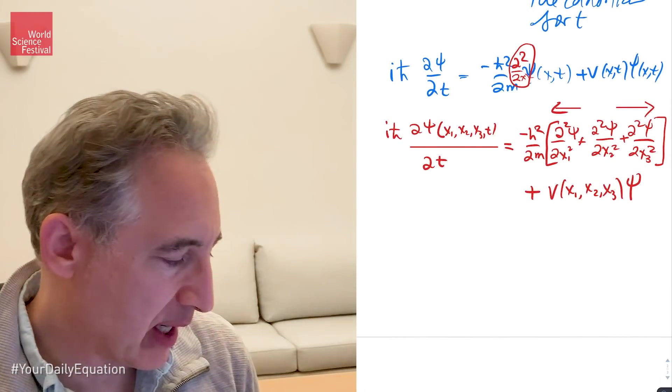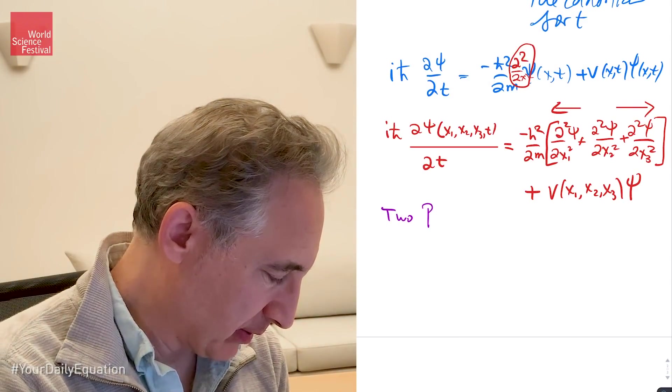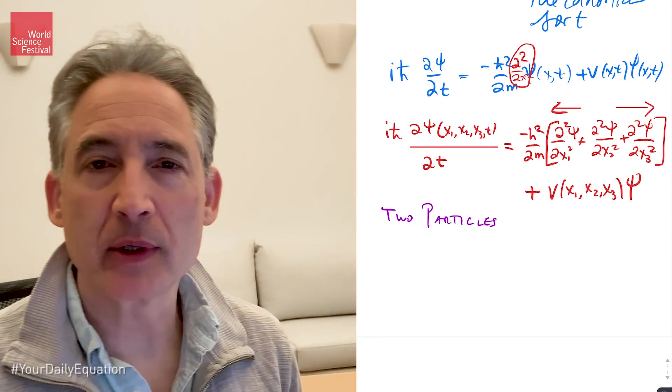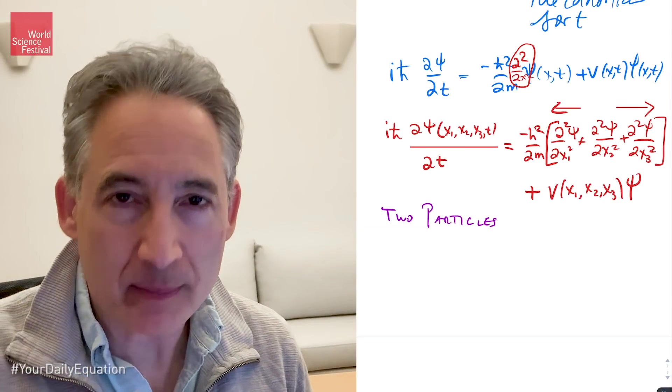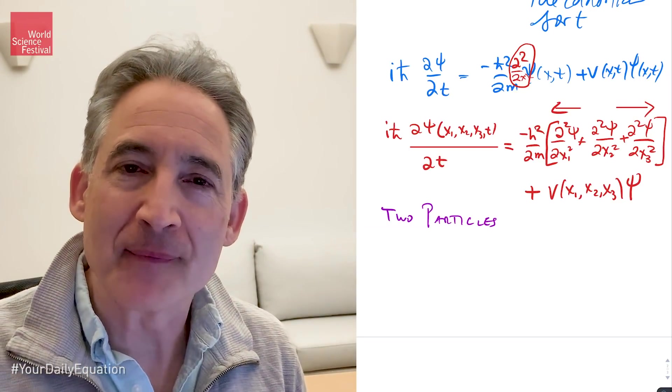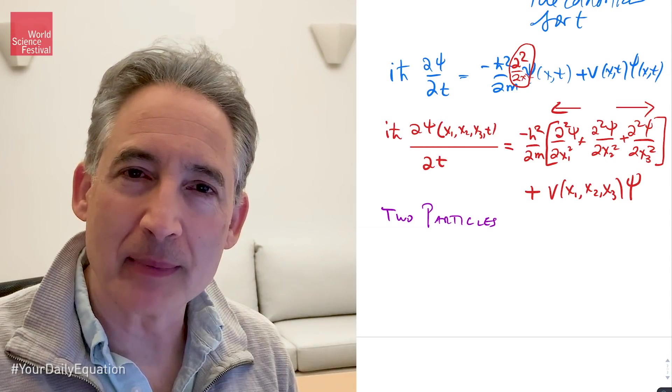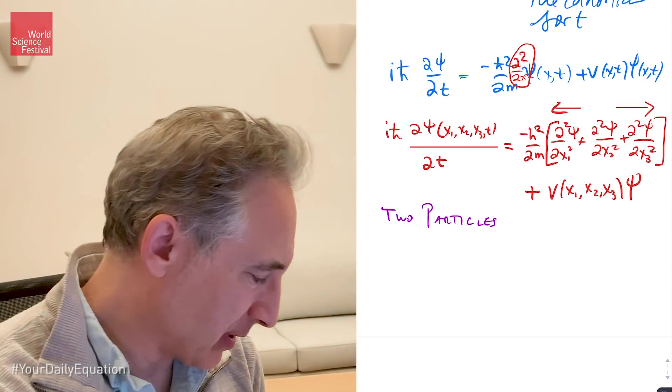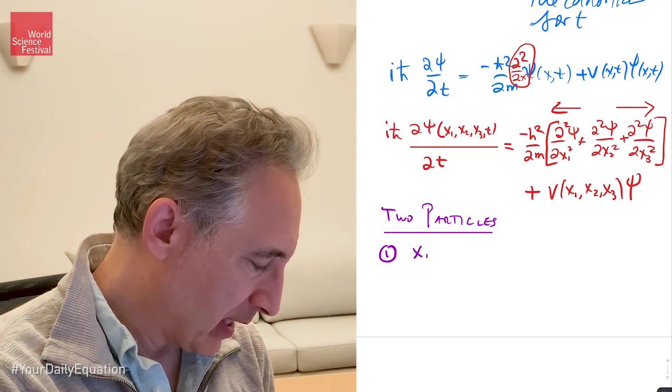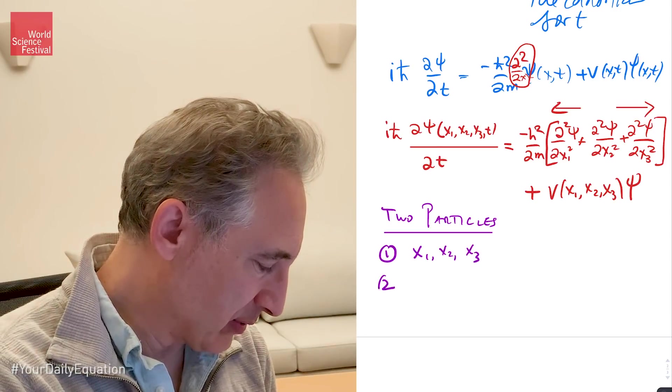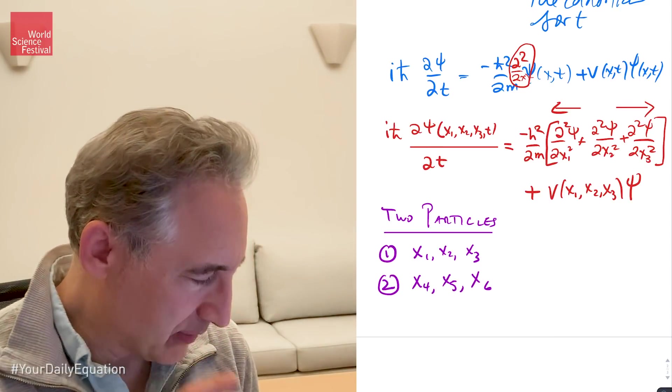But now let's go to the case where, say, we have two particles. Not one particle. Two particles. Well, now we need coordinates for each of the particles. Spatial coordinates. So the time coordinate will be the same for them. There's only one dimension of time. But each of these particles has their own location in space that we need to be able to ascribe probabilities for the particles being at those locations. So let's do that. So let's say that for particle 1, we use, say, x₁, x₂, and x₃. For particle 2, let's say we use x₄, x₅, and x₆.